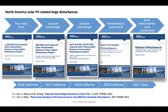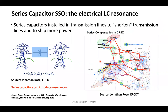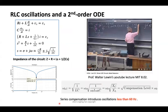The next slides focus on SSO with series capacitors — specifically the interaction of series capacitors and Type 3 or Type 4 wind generators. As a starting point, series capacitors have been widely used in the grid. A figure from Jonathan Rose shows the ALCO map with many series capacitors at 50% compensation. Essentially, series capacitors shorten the electrical distance, reduce impedance, and allow more power transfer — a cheaper transmission solution.